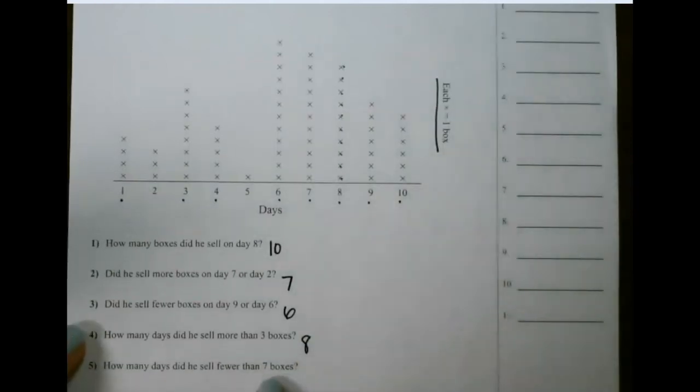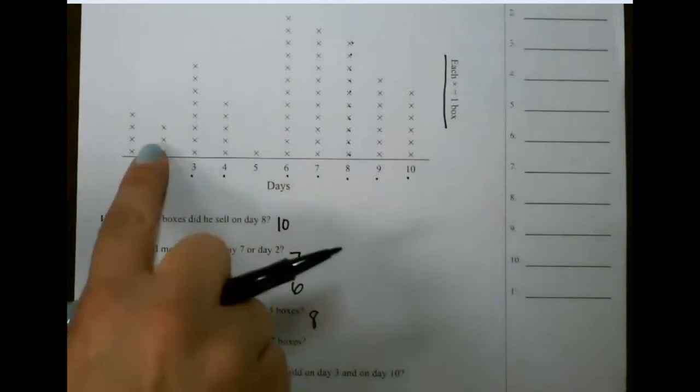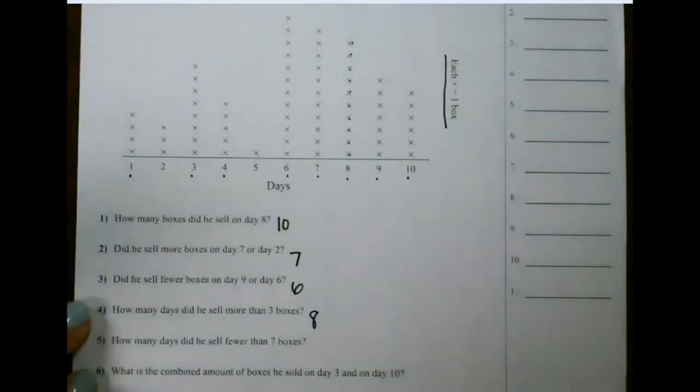And then we have fewer than 7. So we count each line that would give us fewer than 7. And that would be 5 days.